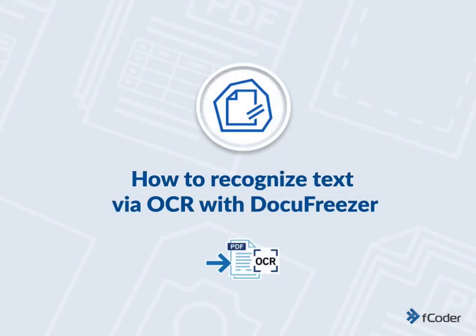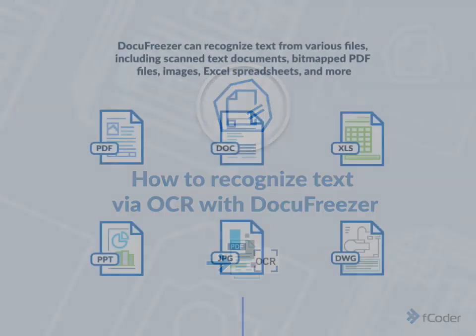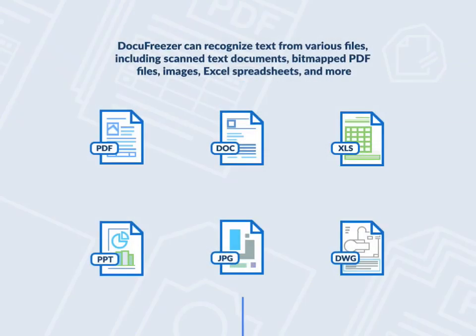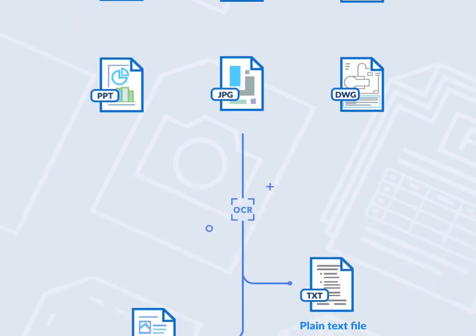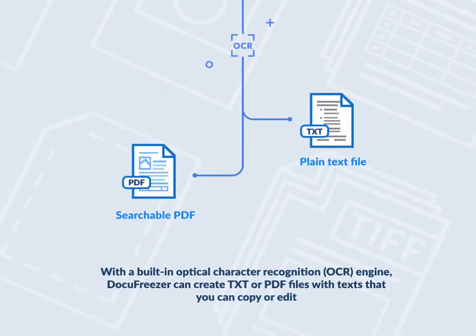How to Recognize Text via OCR with Docufreezer. Docufreezer can recognize text from various files, including scanned text documents, bitmapped PDF files, images, Excel spreadsheets, and more. With a built-in optical character recognition engine, Docufreezer can create TXT or PDF files with texts that you can copy or edit.